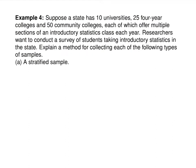Suppose a state has 10 universities, 25 four-year colleges, and 50 community colleges, each offering multiple sections of introductory statistics. Researchers want to survey students taking introductory statistics in the state. For a stratified random sample, a pretty obvious grouping is by type of institution — universities, four-year colleges, and community colleges. Use these three types of schools as strata.